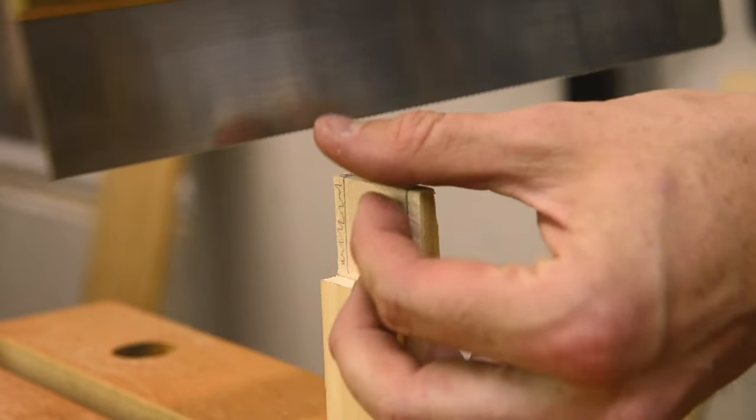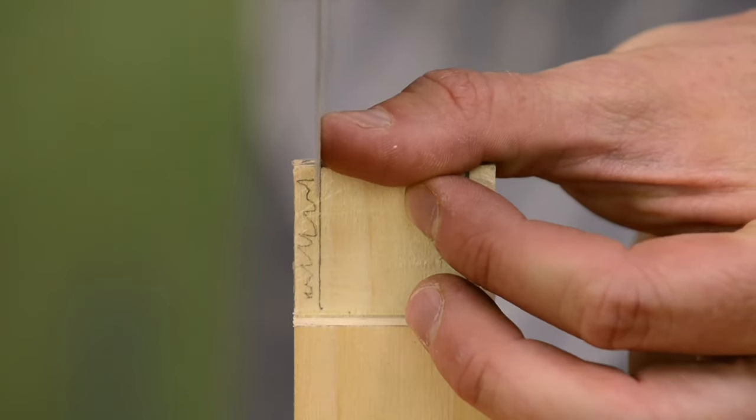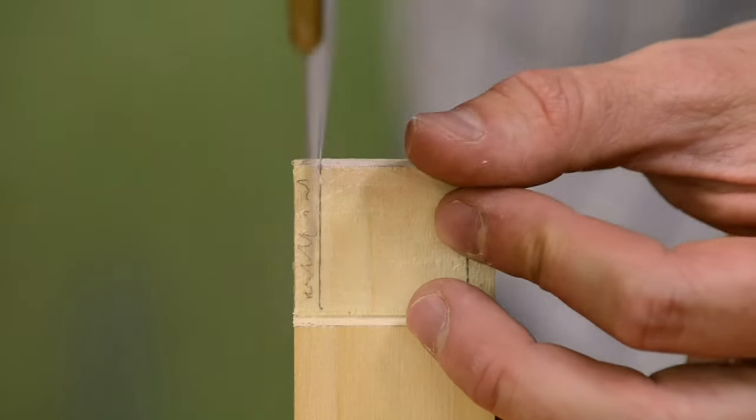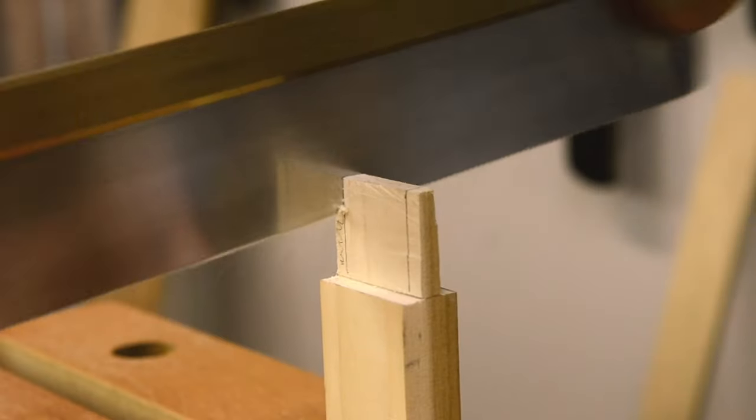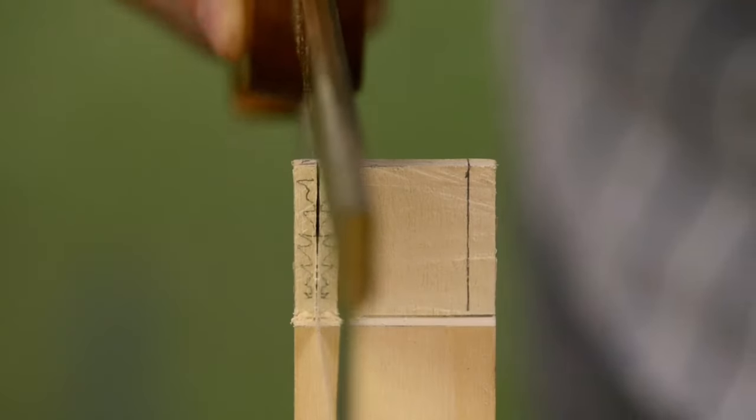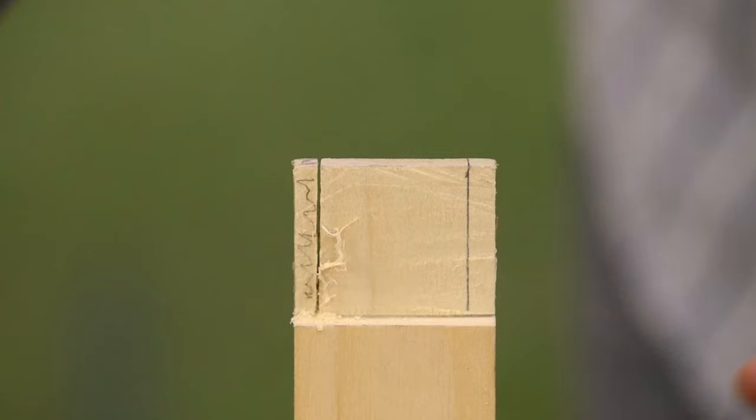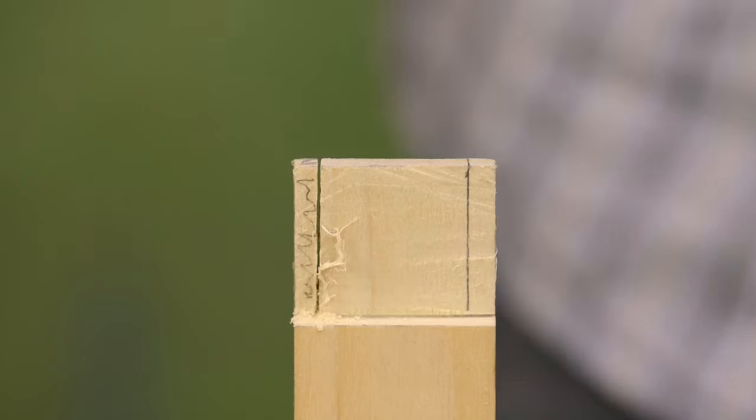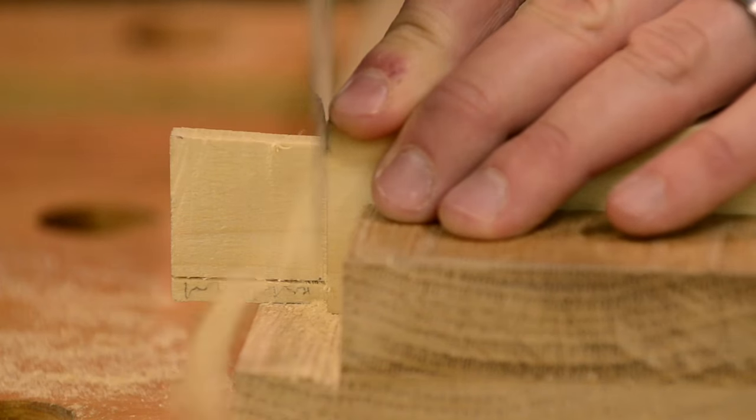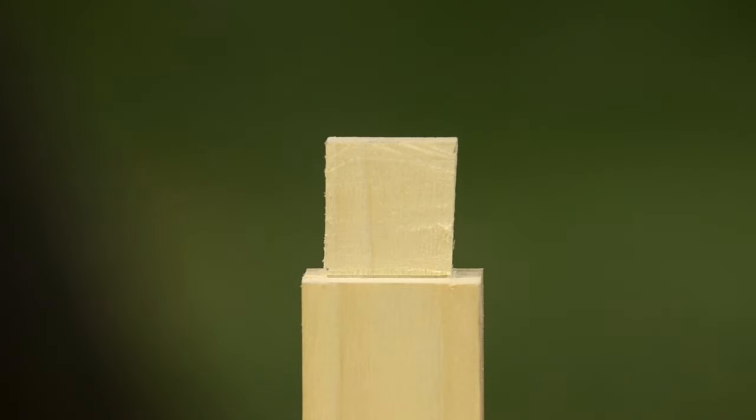Scribe two lines down the sides of your tenons and with a dovetail saw or a tenon saw cut straight down. The dimensions aren't super critical but just go down until you hit the shoulder. Then with a crosscut carcass saw go straight down until it pops off. Do the same to the other side.